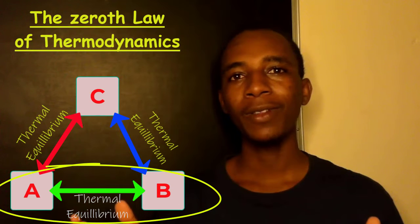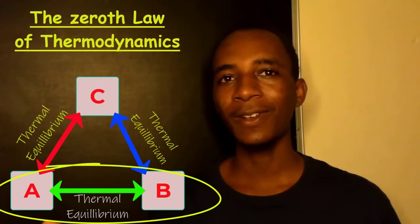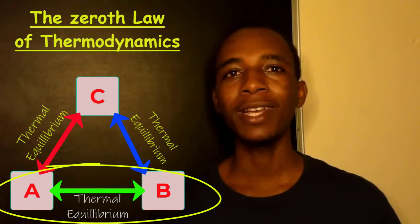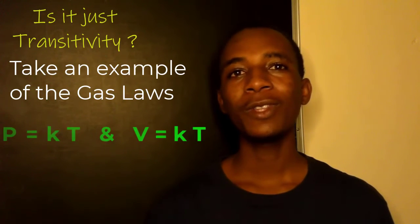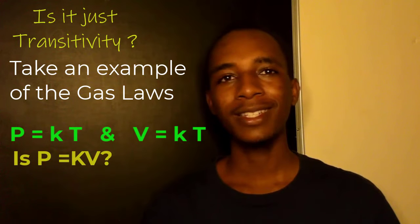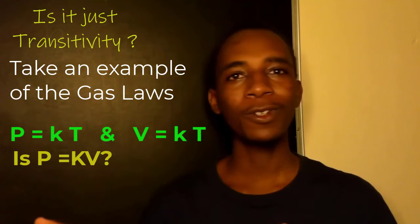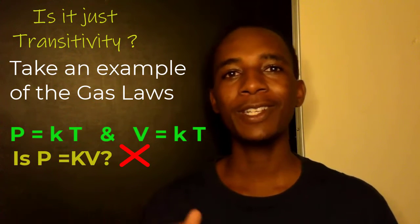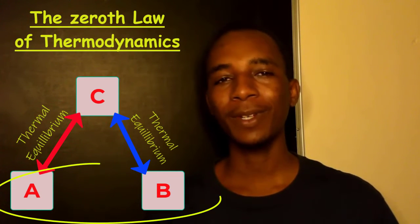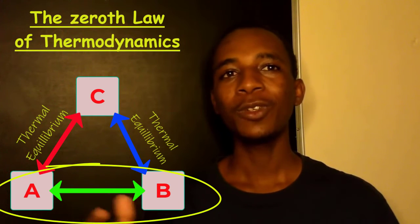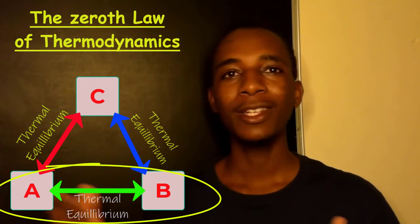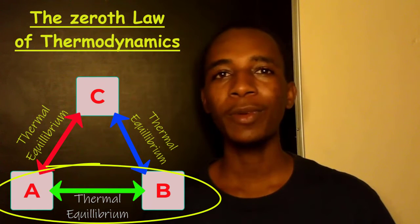Now you may be thinking this is a simple transitive property and it's just obvious. But let me show you that this is not just an obvious statement. With allusion to gas laws, we know that pressure is proportional to volume and volume is proportional to temperature. Now this would mean that pressure is also proportional to volume, but that's not the case — instead, pressure is inversely proportional to volume. So this is not just a simple transitive property. It's a wonder in itself that if two bodies are independently in thermoequilibrium with a third body C, then the two bodies will also be in thermoequilibrium with each other.